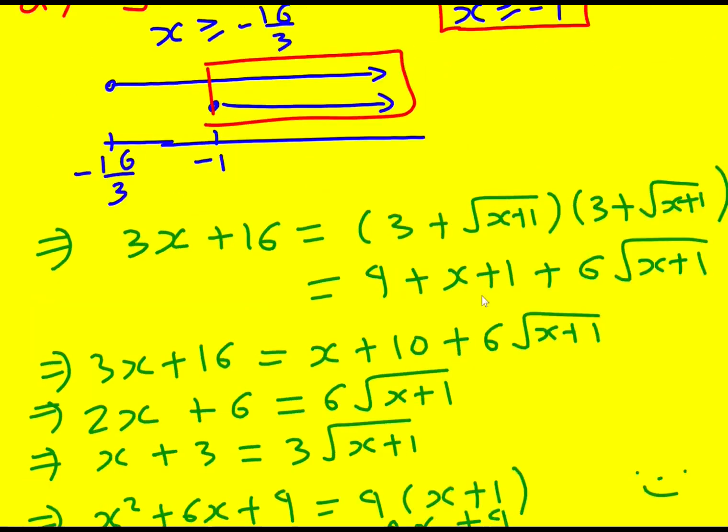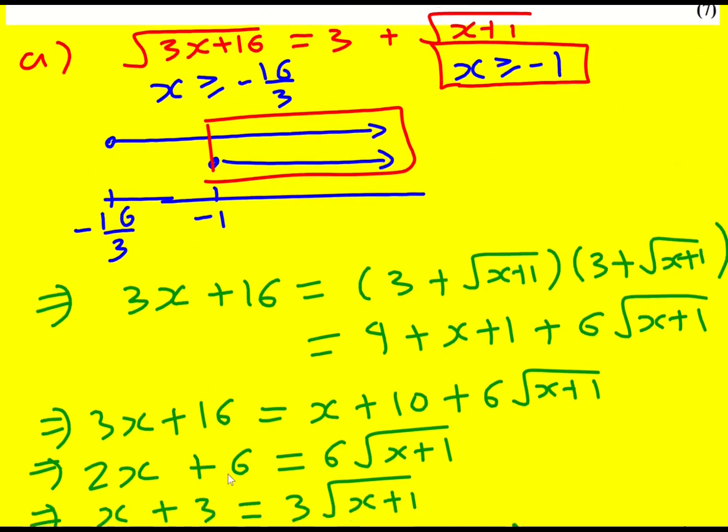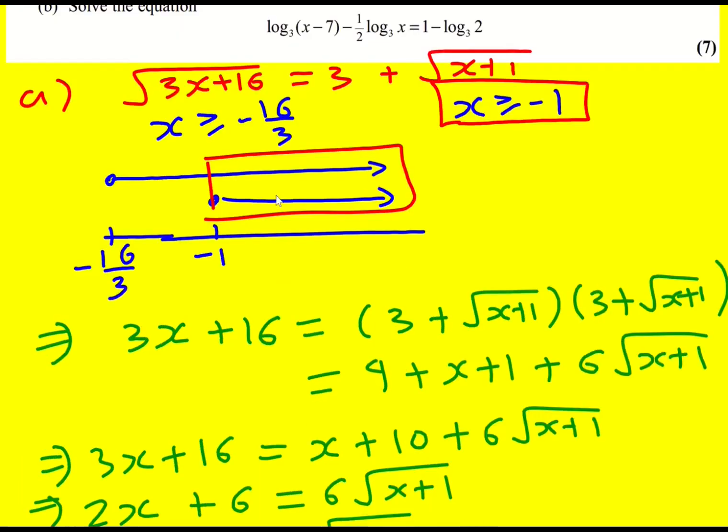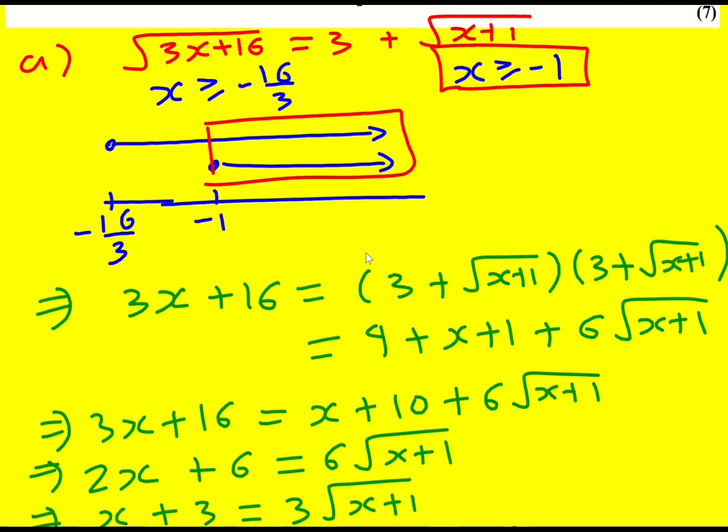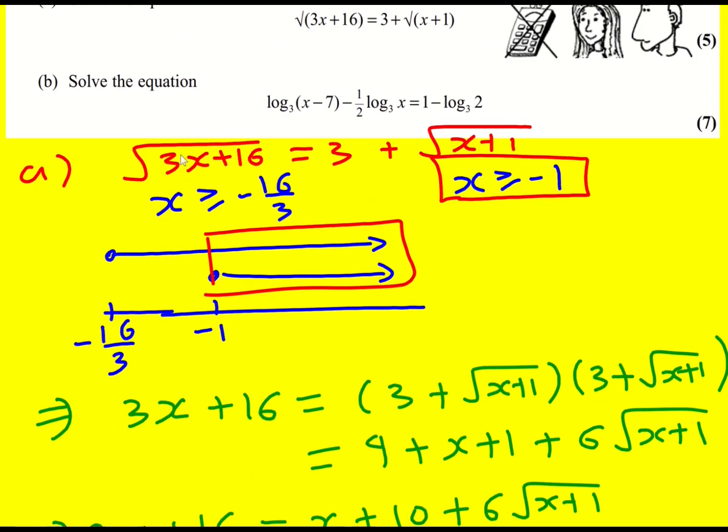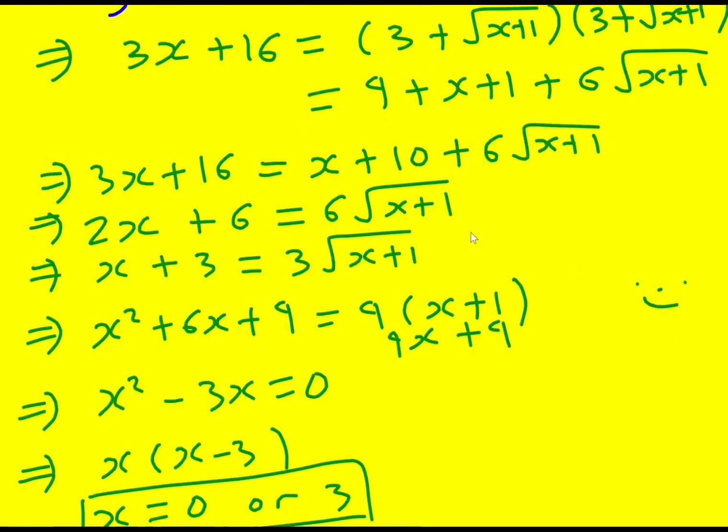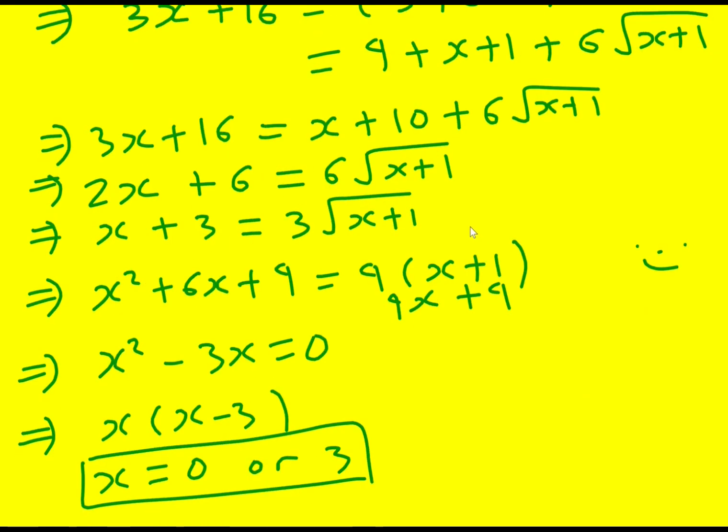So you either need to have this condition that you're aware of at the start or you just substitute these back in and check that it works. When I put 0 in, I'm going to get root 16, which is 4, is equal to 3 plus root 1, which is also 3 plus 1 or 4 overall. And if I put in 3, I'm going to get 9 plus 16, 25 square root is 5. And then 3 plus the square root of 4, which is 2, is also 5. So I can be really sure that both of those are solutions. If you have the time, that is also another nice check. Both solutions are valid.